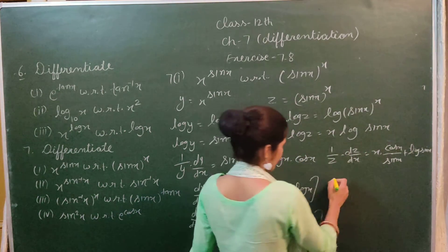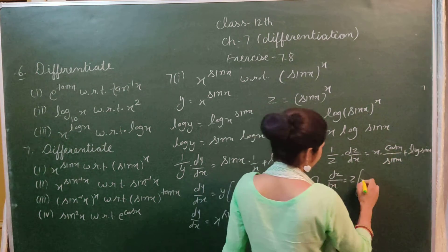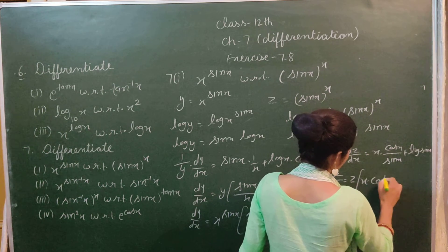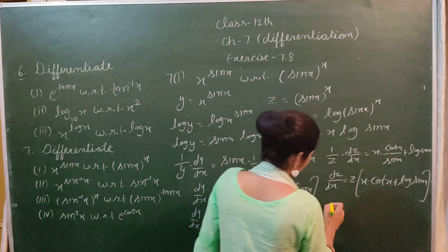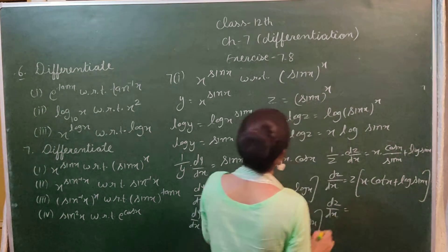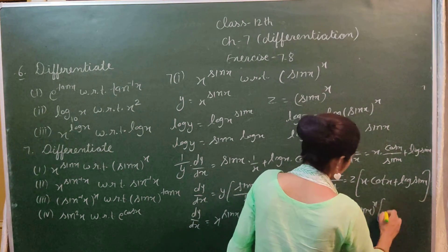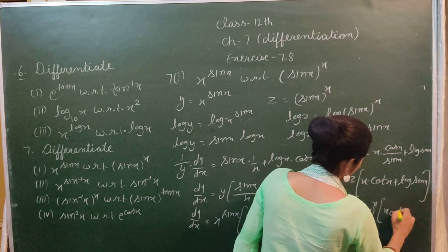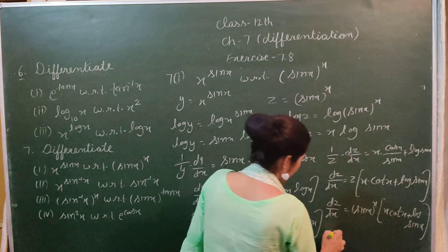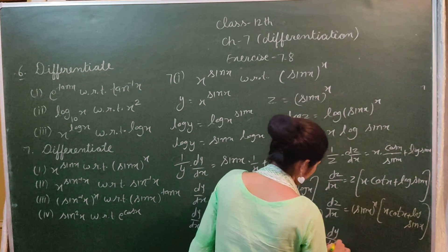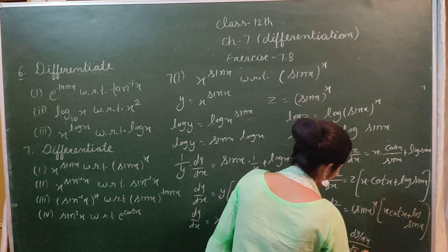So dz/dx = z times (x cot x + log sin x) = (sin x)^x times (x cot x + log sin x). Then dy/dz = (dy/dx) divided by (dz/dx).